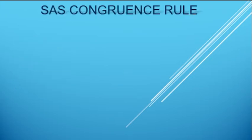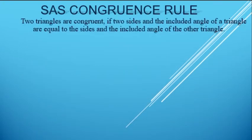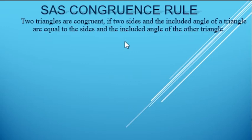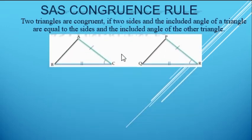The first criteria is Side Angle Side congruence rule. The 2 triangles are congruent if 2 sides and the included angle of a triangle are equal to the sides and the included angle of the other triangle. So, looking at the figure,